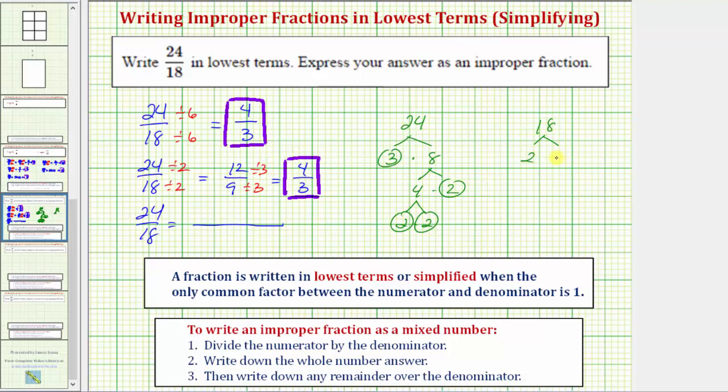Eighteen is equal to two times nine, two is prime, and nine equals three times three, which are both prime.